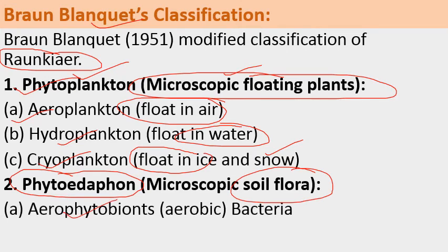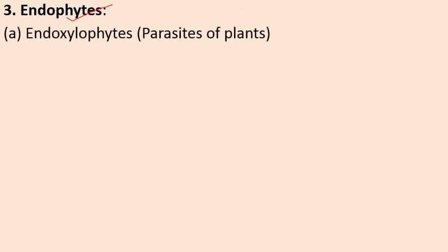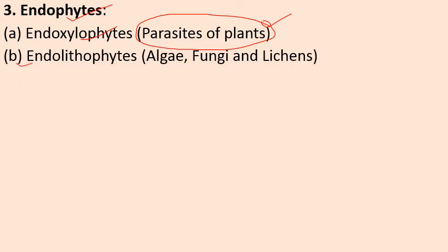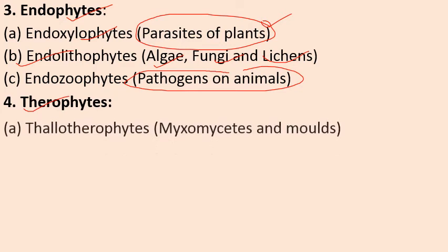The next category in Braun-Blanquet's system is Phytoedaphon — the microscopic soil flora. 'Edaphon' is a term related to soil. These are further divided into Aerophytobion (aerobic bacteria requiring oxygen for respiration) and Anaerophytobion (anaerobic microbes). The third category is Endophytes — plants that grow inside plant bodies — including Endozylophytes (parasitic plants growing inside plant bodies) and Endolithophytes (growing inside soil, rocks, or stone — e.g., algae, fungi, and lichens).